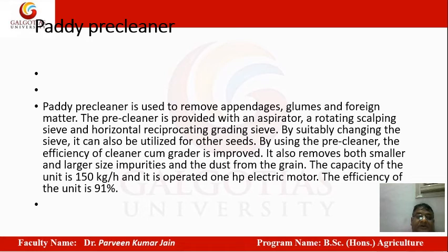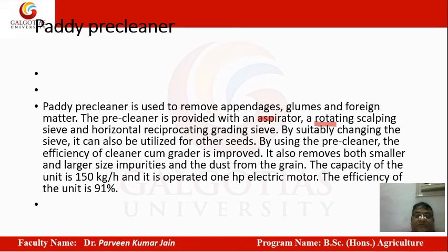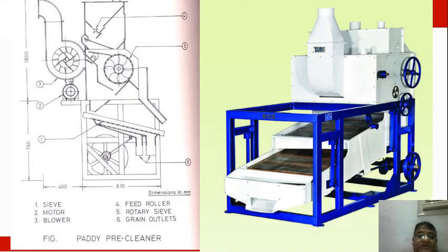The paddy pre-cleaner is another equipment used to remove appendages, glumes, and foreign matter. It is provided with an aspirator and a rotary scraper, which help with pre-cleaning. The efficiency of cleaning-cum-grading is improved, and it removes both smaller and larger size impurities. The capacity is around 100 kg of grains per hour, operated on a one-horsepower motor with efficiency up to 91 percent.